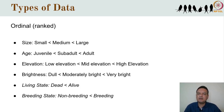A particular kind of ordinal data is dichotomous data. Although 'dead' can arguably be ranked as less living than 'alive', in practice these kinds of data are usually treated as categorical rather than ordinal.